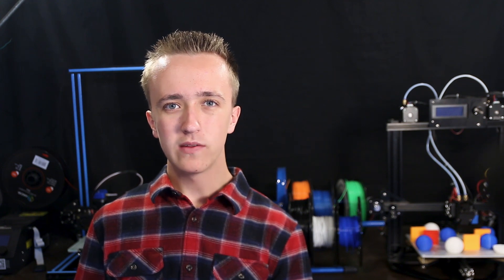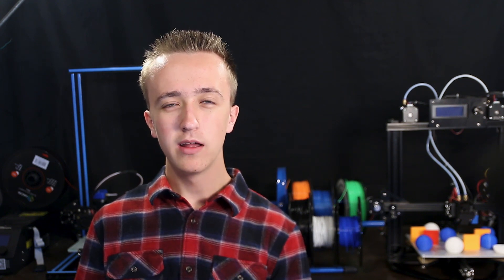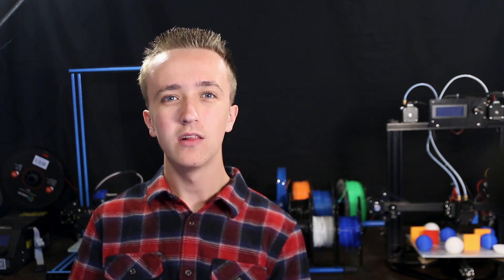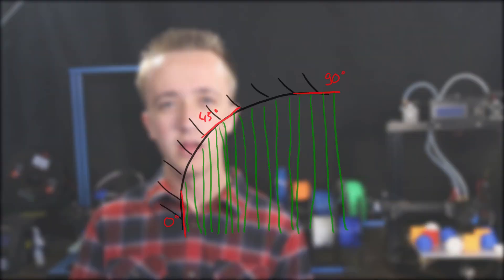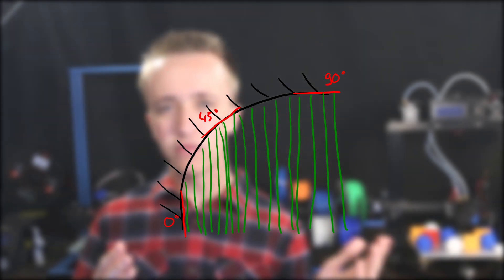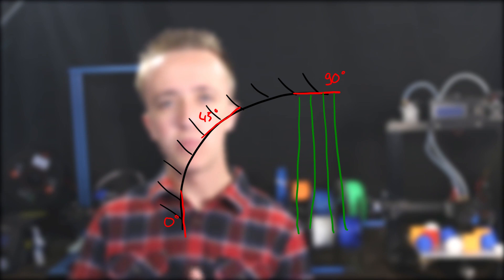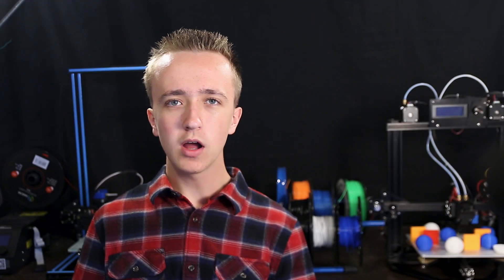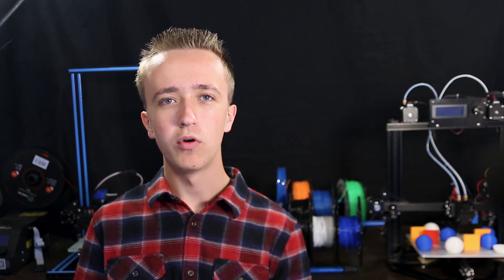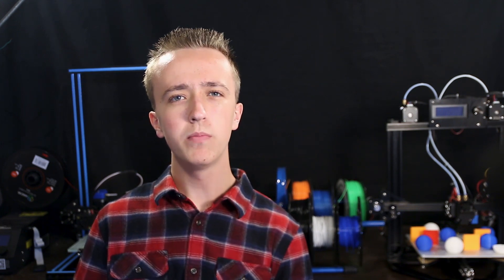When you have a model that needs support material, the way that the slicer decides where to put the support material is by the angle of the plane. And by changing the support overhang angle, you tell the printer at which angle to start adding support. With an angle of 1 that would mean that you get pretty much support everywhere, whereas an angle of 90 degrees would mean that you only get support if the object is completely horizontal. There are also a couple more settings in the support panel, but this one is the most important one.